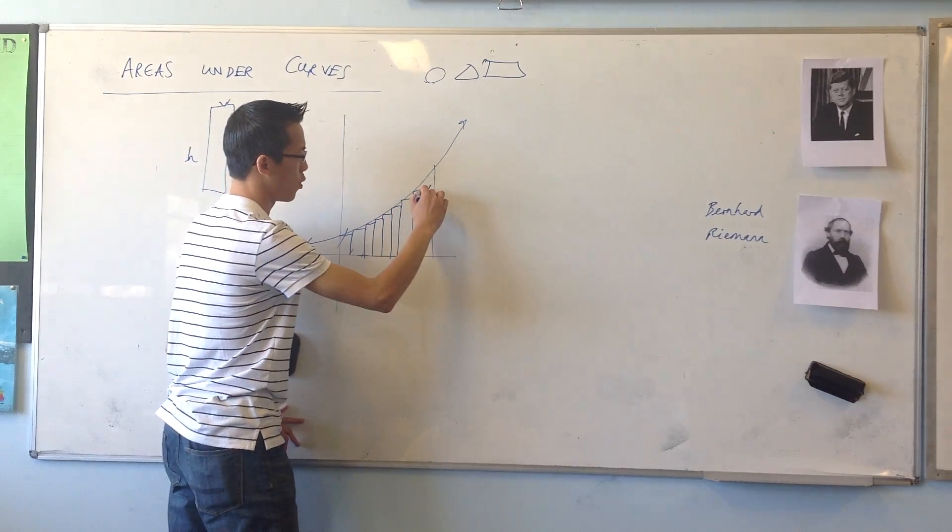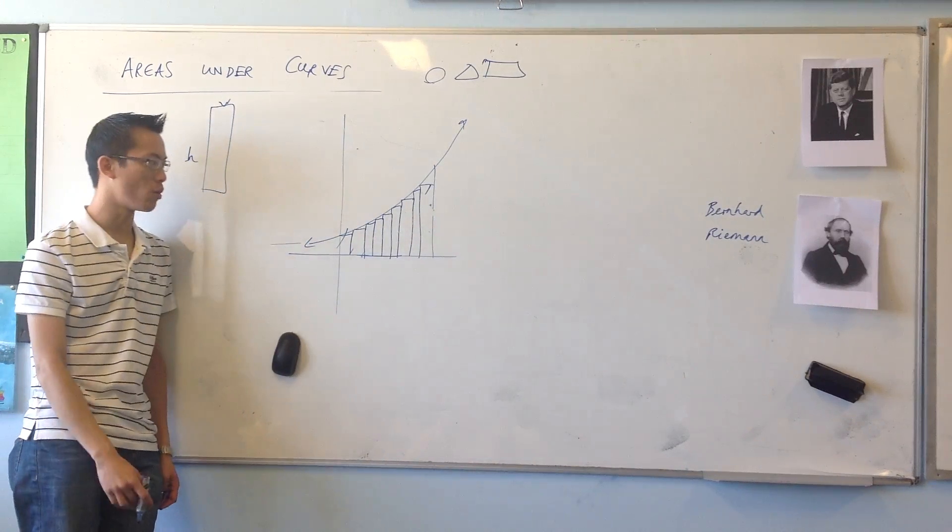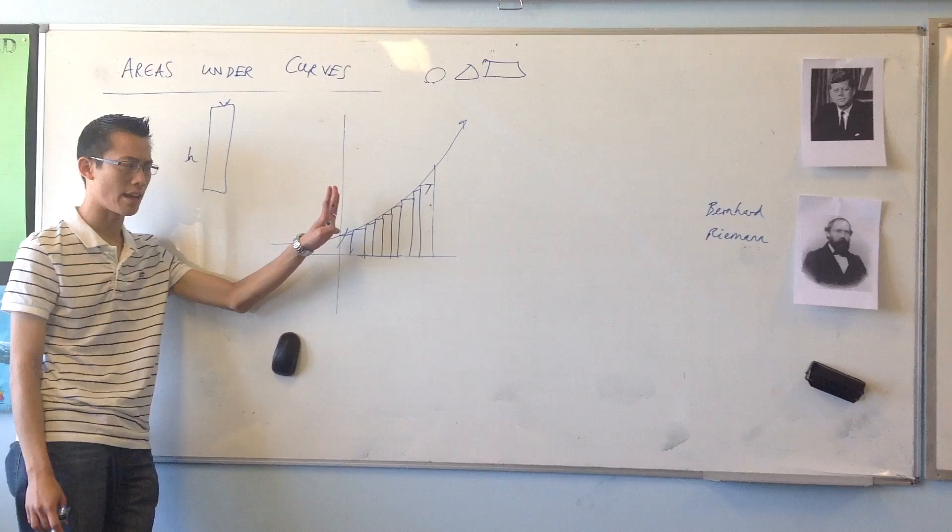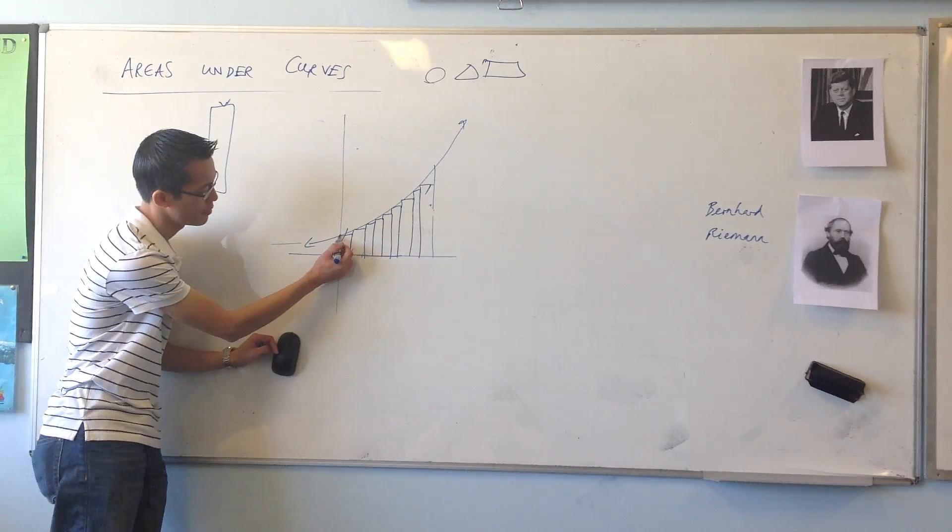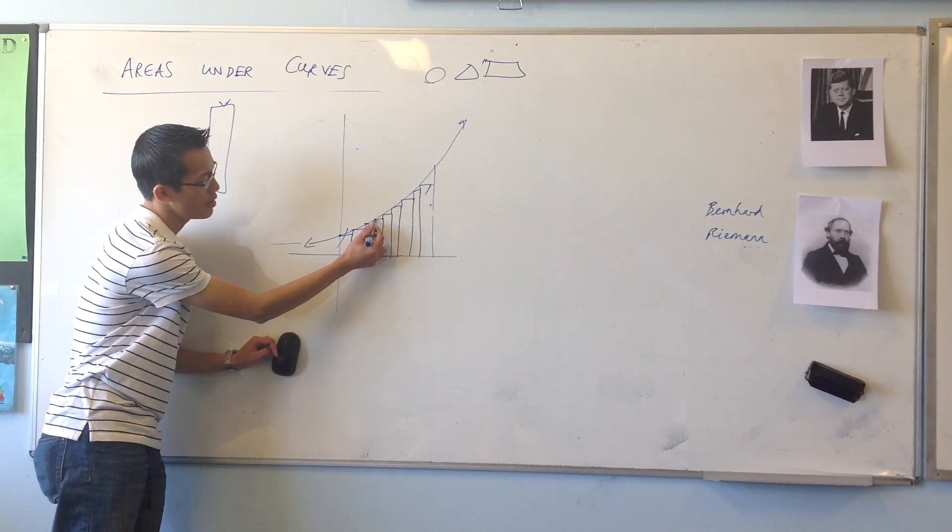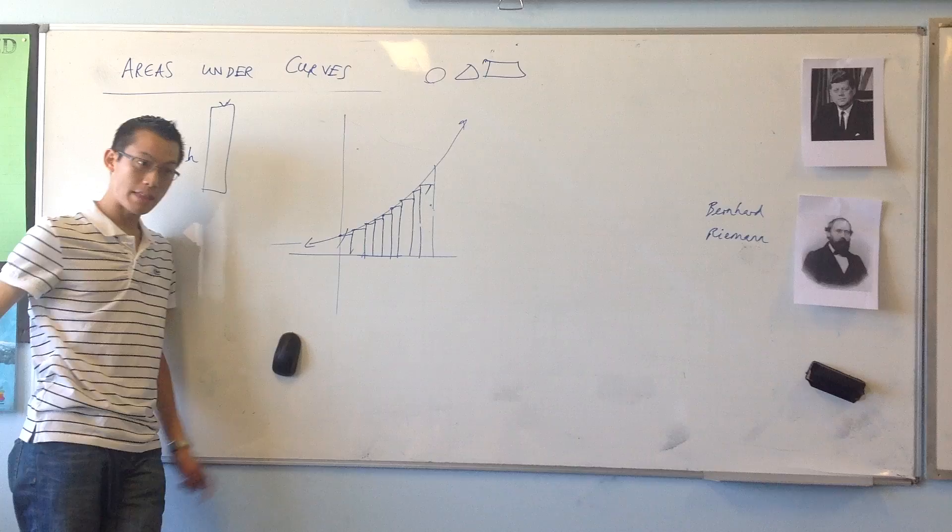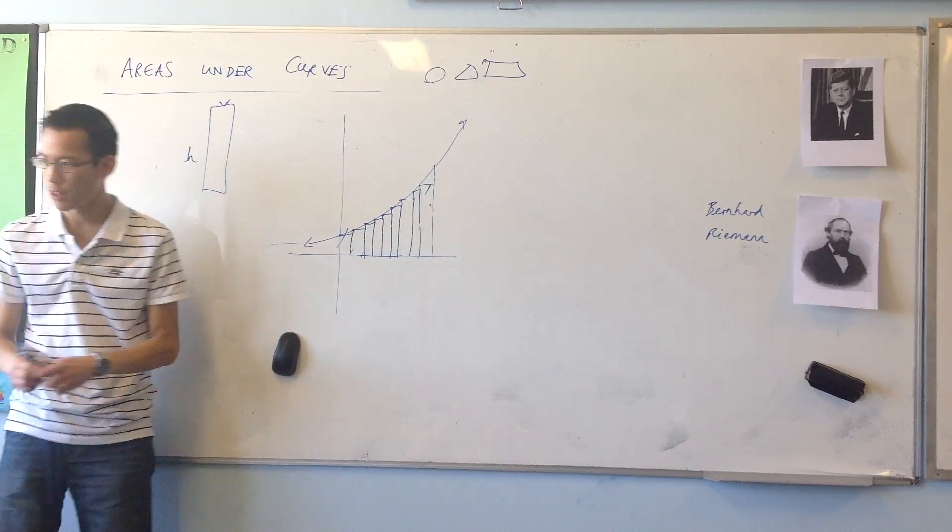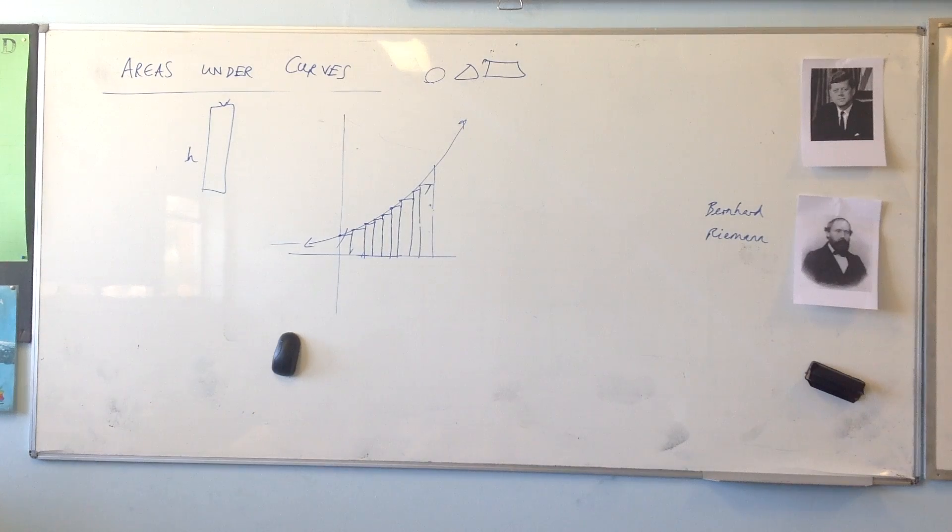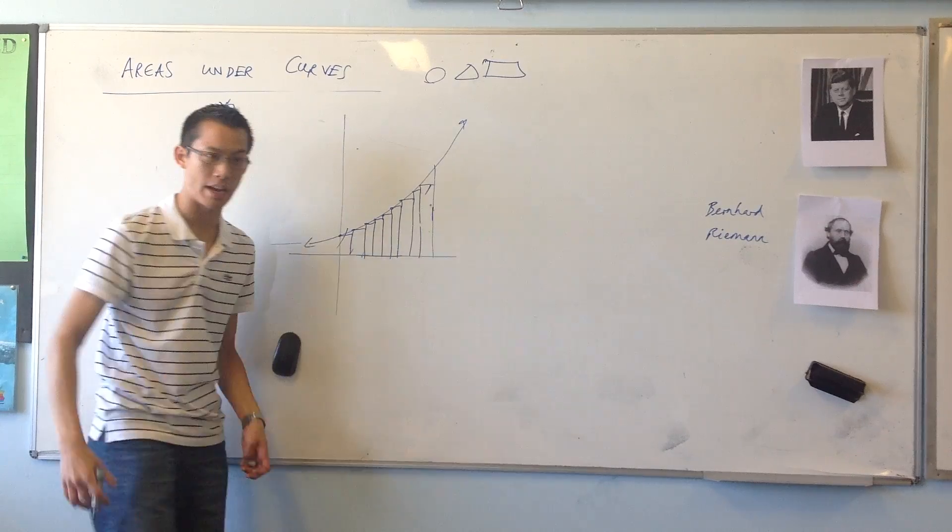He said, look, if I take all of these rectangles, and this is called the left rectangle way, I'll show you the right way in a second. Oh no sorry, it's left. If I take the area of all of these rectangles, that'll get pretty close. And the more rectangles I take, the closer I'll get. So he said, I can get a pretty close approximation.